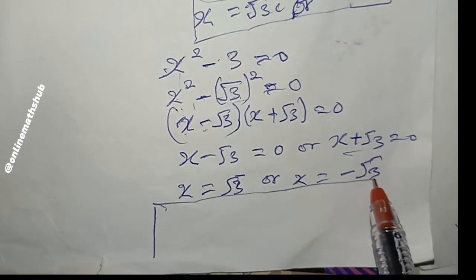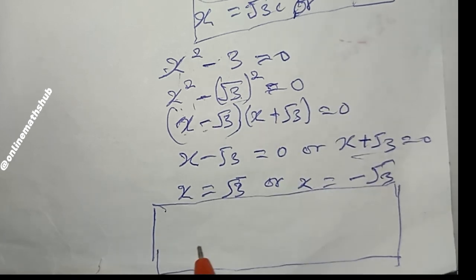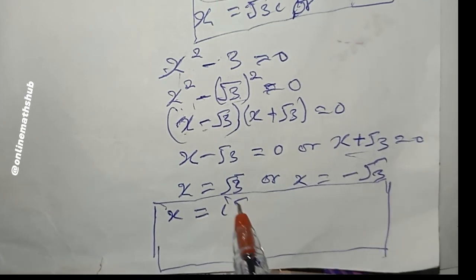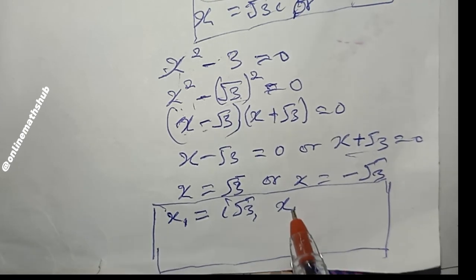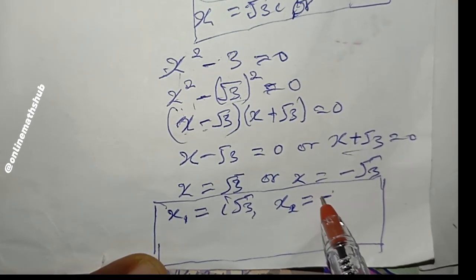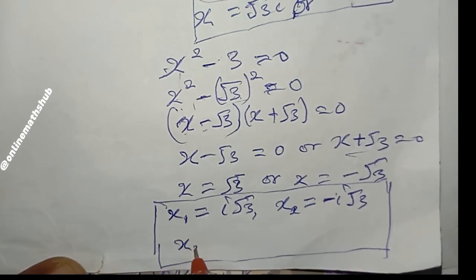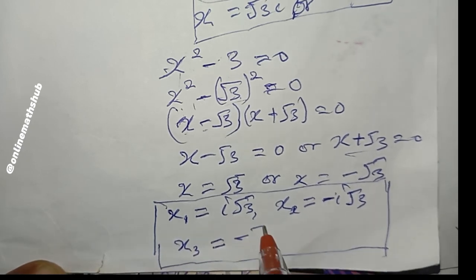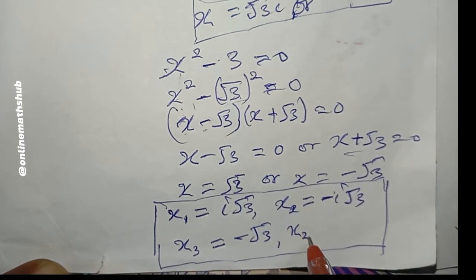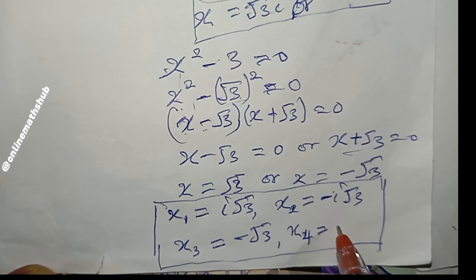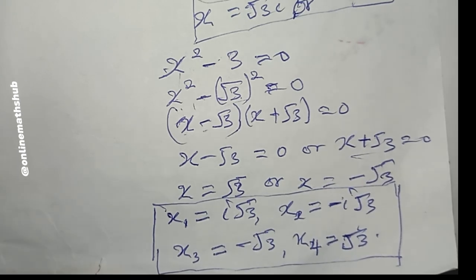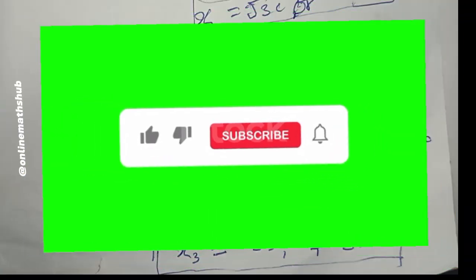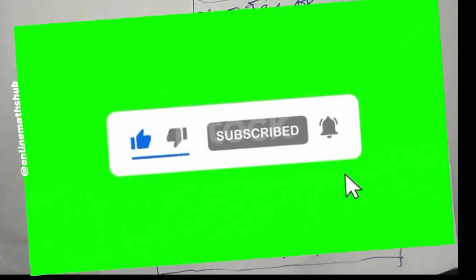Putting all four values of x together: x₁ = i√3, x₂ = −i√3, x₃ = −√3, and x₄ = √3. These are the four values of x that satisfy the equation x⁴ = 9. If you enjoyed this video, hit the like button and subscribe for more updates — see you in the next video!